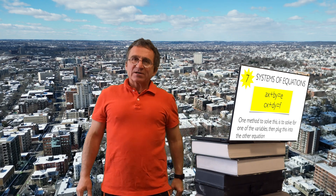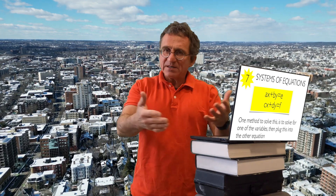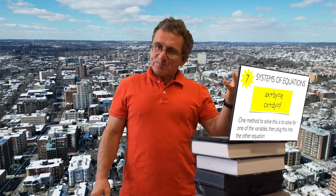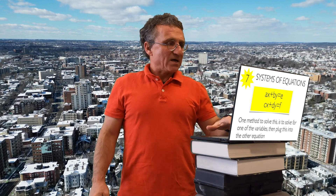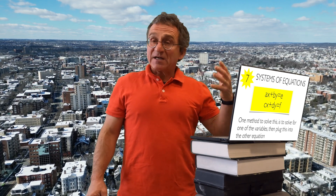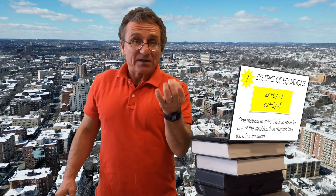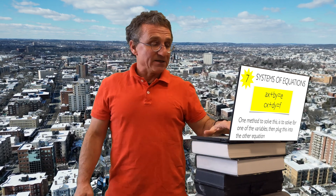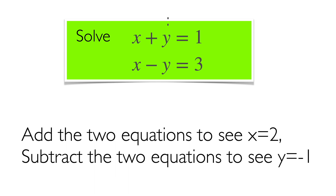Systems of equations always appear in intermediate algebra topics. We can solve them, for example, by eliminating one of the variables and plugging it into the other equation. We can also add the two equations to get 2x equals 4, or subtract them to find y.